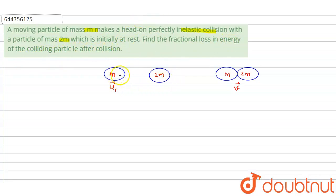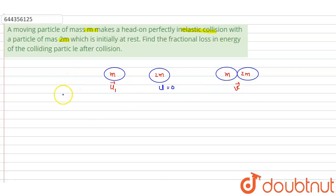We have drawn the image here. The first particle has mass m and its velocity is u1. The second particle has mass 2m and its velocity u is equal to 0. Because it is a perfectly inelastic collision, after collision they will cling to each other and move together. The final velocity is v and the total mass is 3m.